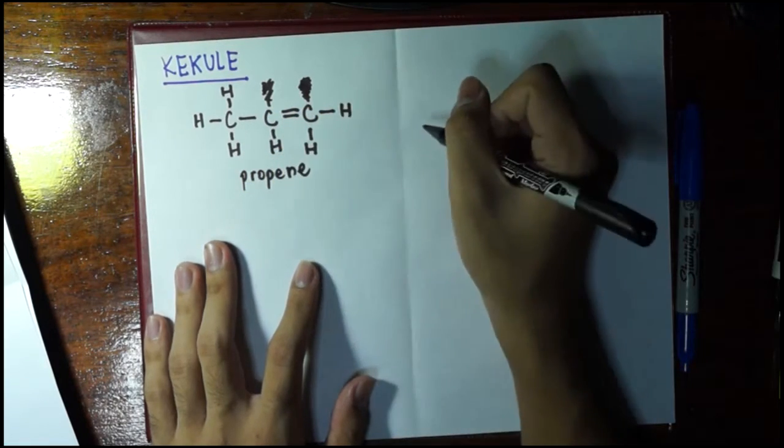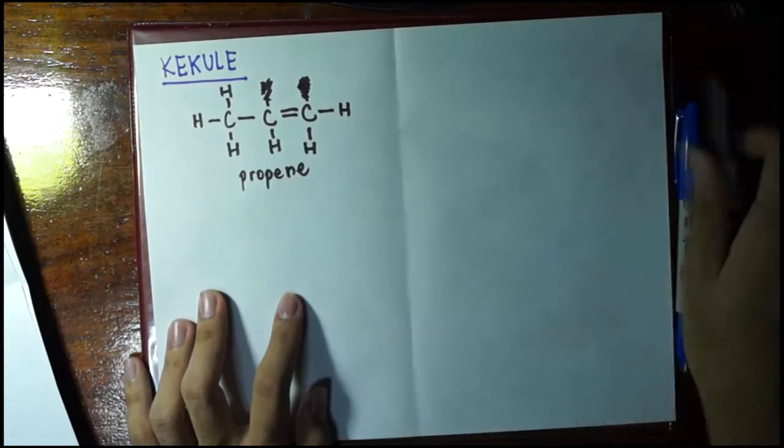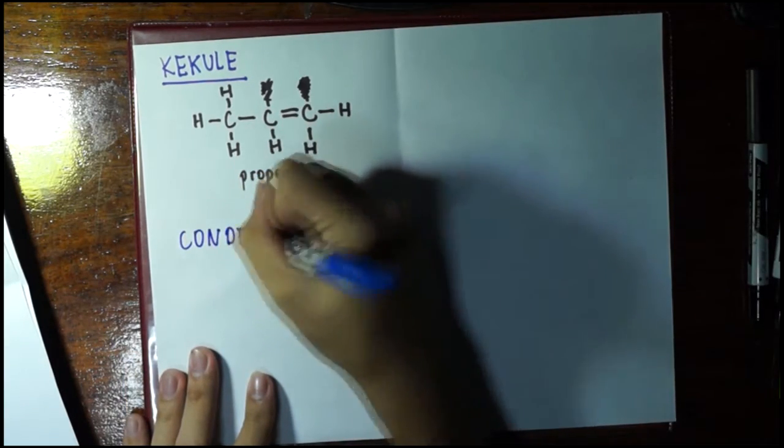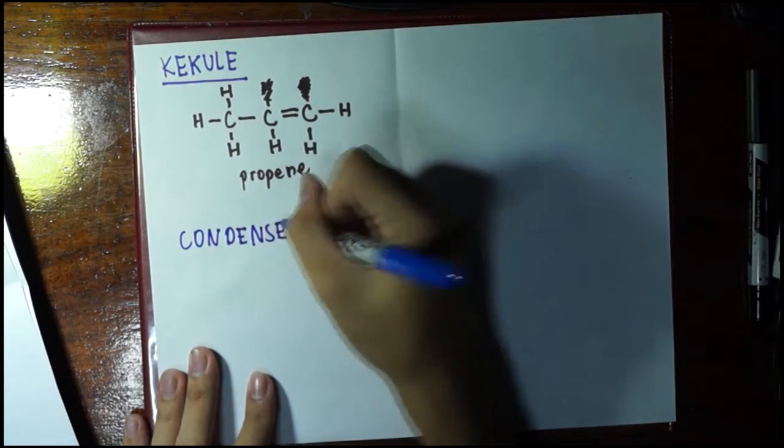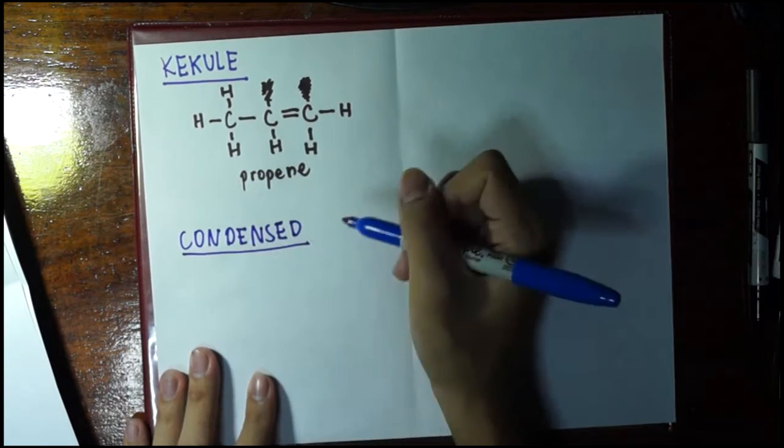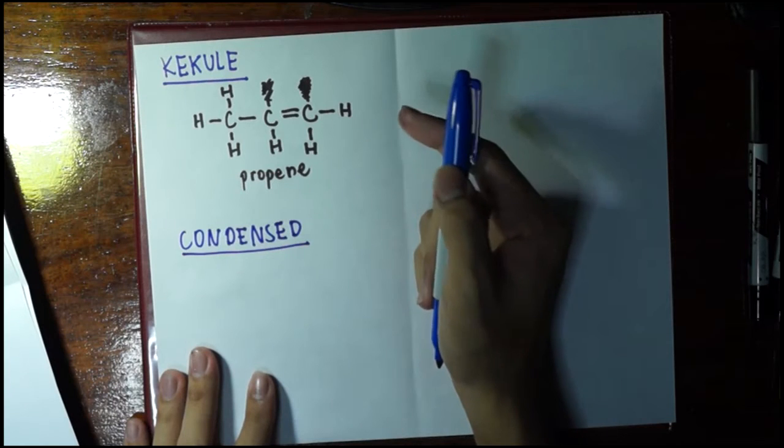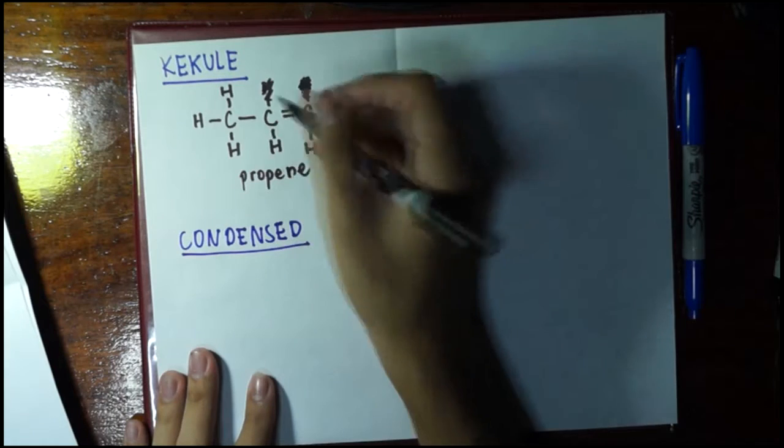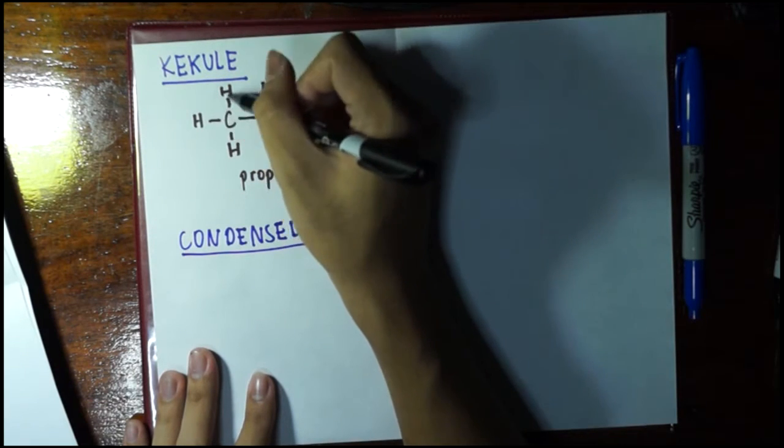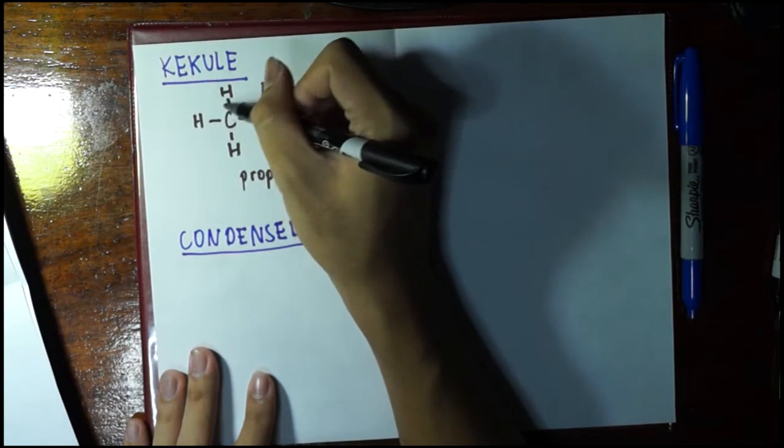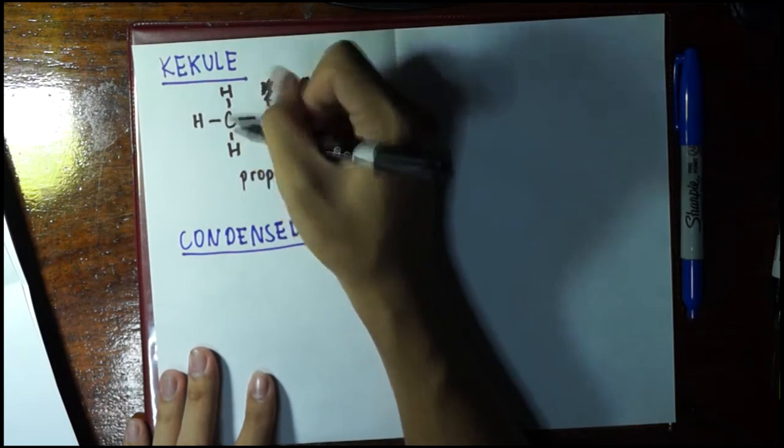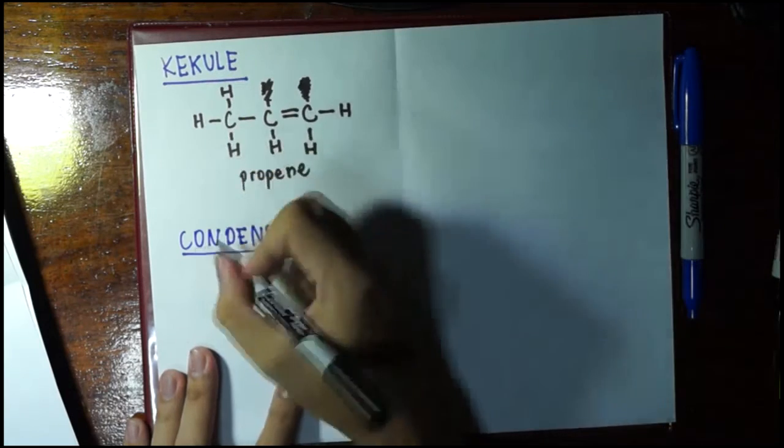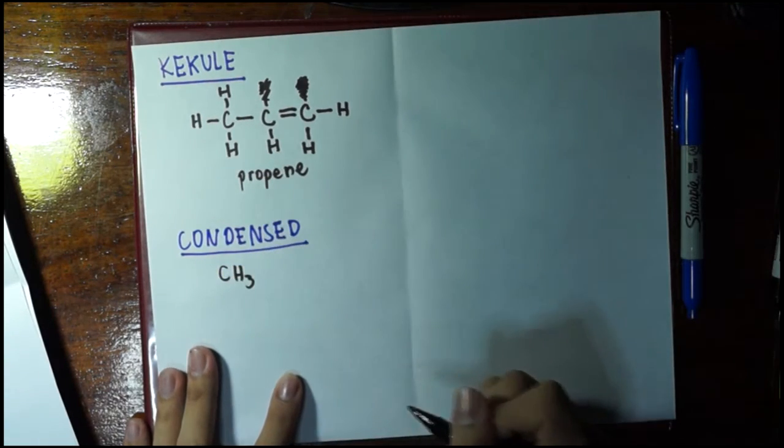Let's try to draw propene in all types of structures. Now we go to the second: the condensed structure. The difference between the Kekule and the condensed structure is that in the condensed structure, any single bond between two elements is not drawn anymore. For example, I draw propene. Since these are all single bonds, we can just write this as this C and three Hs, simply like this.